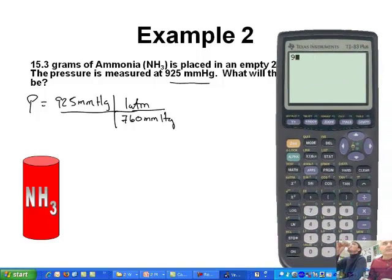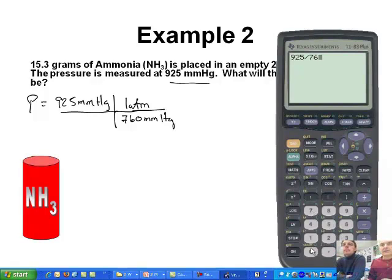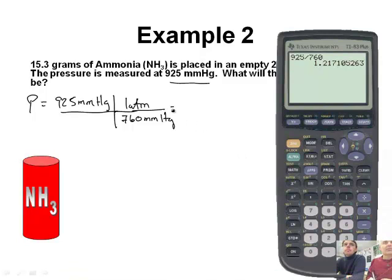925 divided by 760 gives me 1.22. So we've got 1.22 atmospheres.